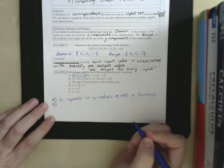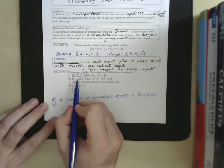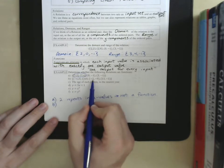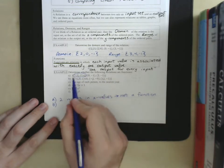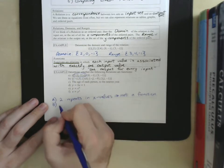We look at B, negative 1, 3, negative 2, 11, no repeats in the input. So, this is a function.